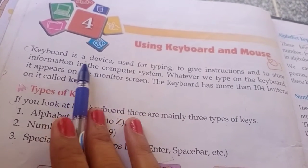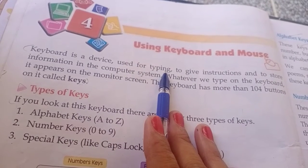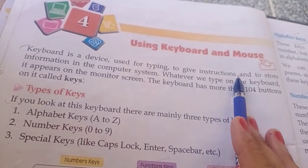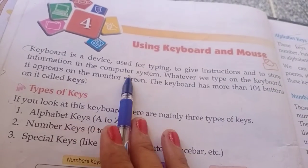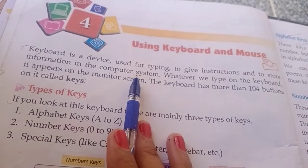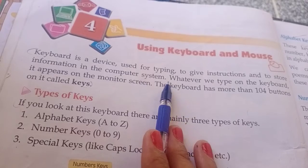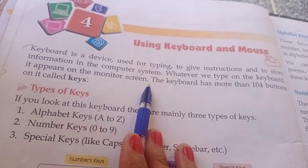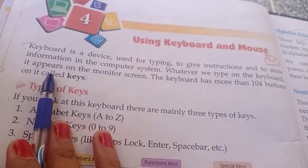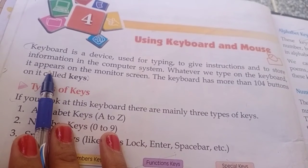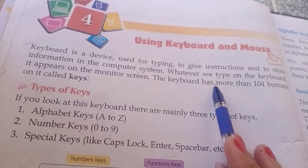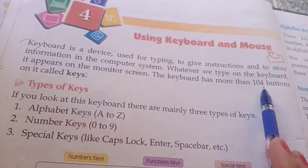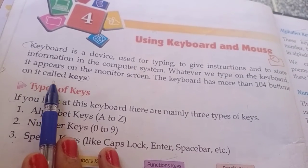Keyboard is a device. It is used for typing, to give instructions, and to store information in the computer system. Whatever we type on the keyboard, it appears on the monitor screen. The keyboard has more than 104 buttons on it, called keys.